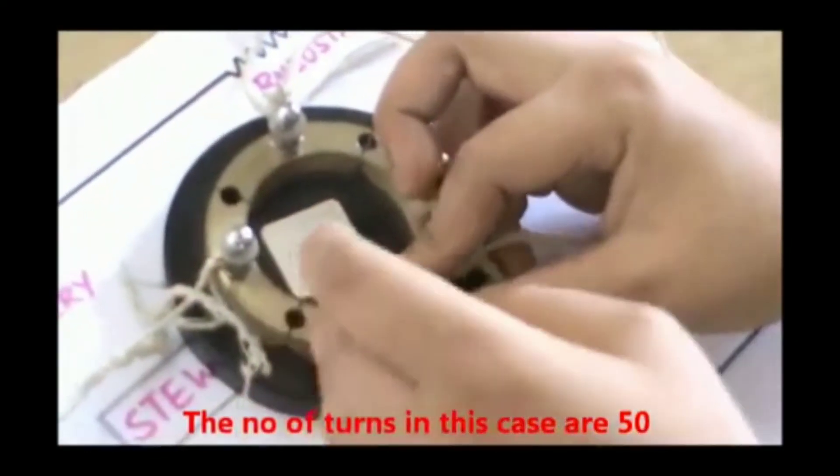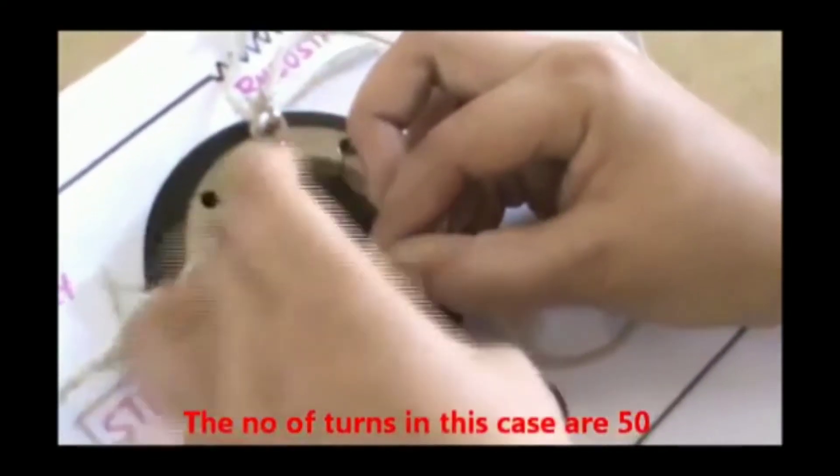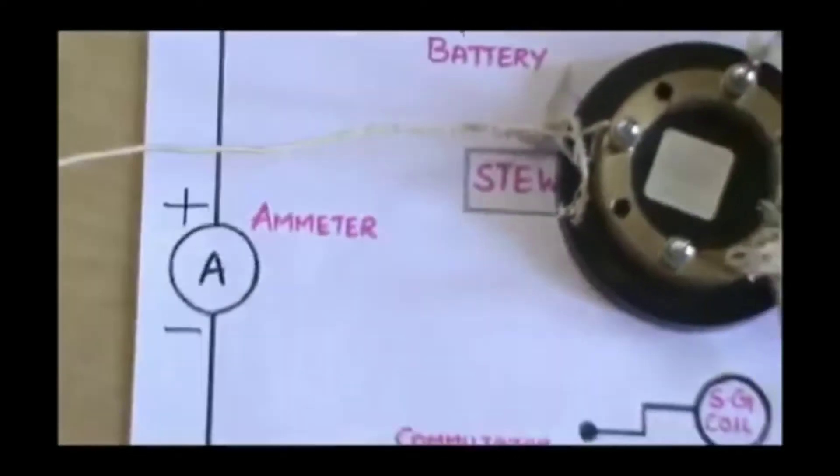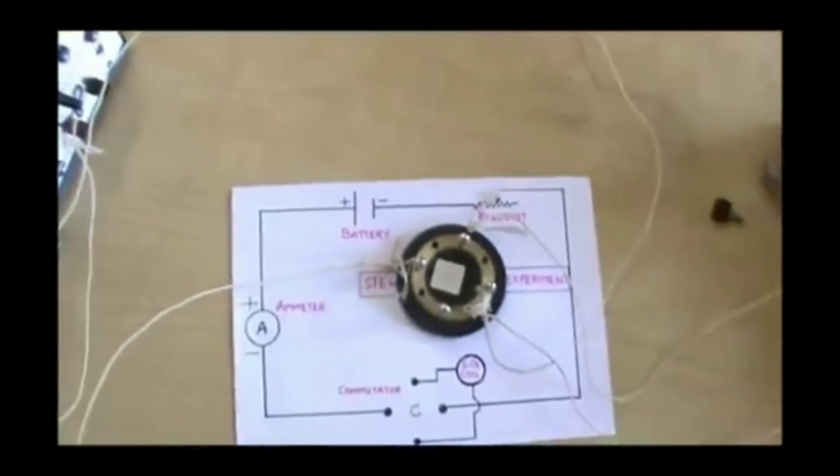In this case there are 50 turns we are connecting for the Stewart and Gee galvanometer. Now we will keep these apparatus in the magnetic meridian.